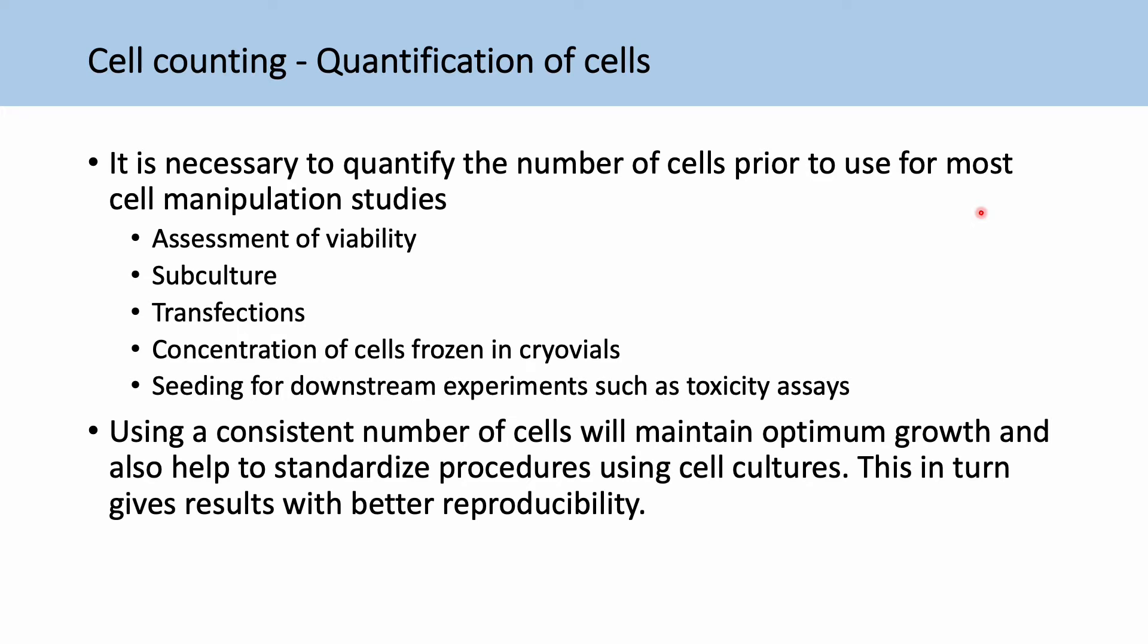So using a consistent number of cells is going to help maintain the best growth of your cells, it standardizes your procedures, and it gives you results with better reproducibility, for example, between replicates.